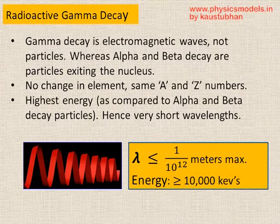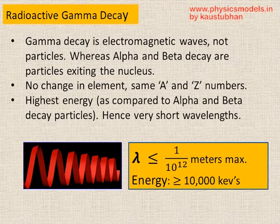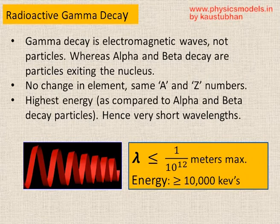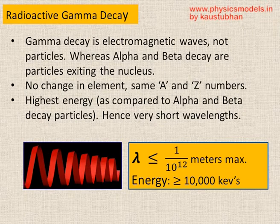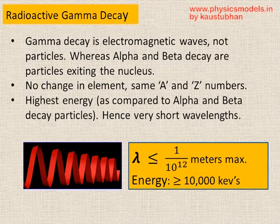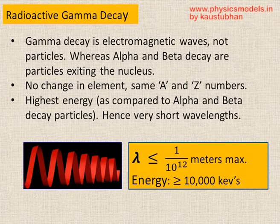Therefore, gamma decay is electromagnetic waves — it's not particles. There is no change in the element, there is no change in atomic number and mass number, and the highest energy of all the radioactive decays is found in the gamma waves. Their very short wavelength is less than 1×10⁻¹² meters.